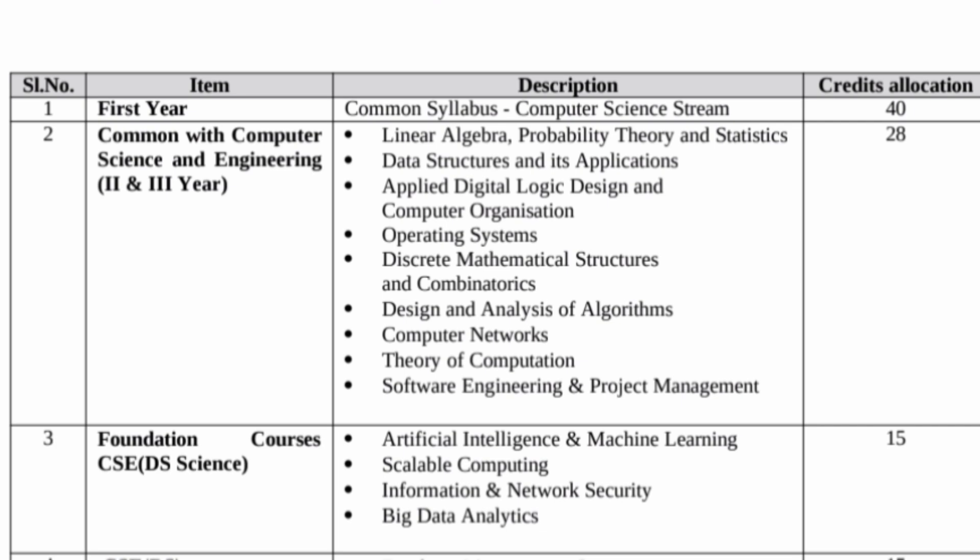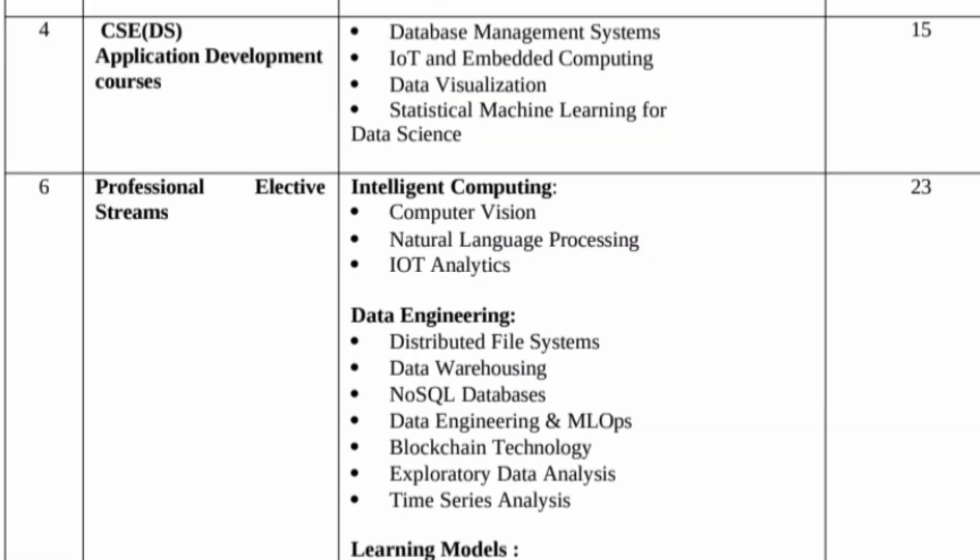The benefit of taking CSC Data Science is the additional specialized content. The foundation course of CSC Data Science covers artificial intelligence and machine learning, scalable computing, information and network security, and big data analytics — giving you 15 additional credits that CSC core students do not study. Moving on to the CSC Data Science application development course, you study database management systems, IoT, embedded system computing, data visualization, and statistical machine learning for data science, earning another 15 credits.